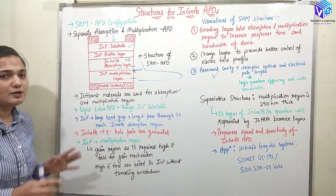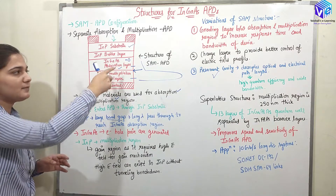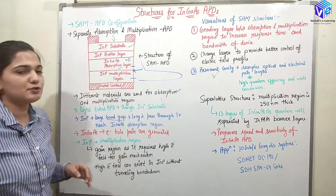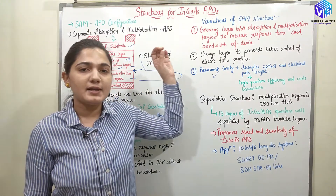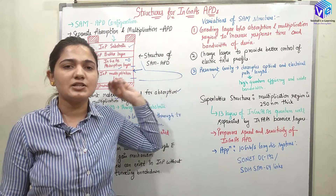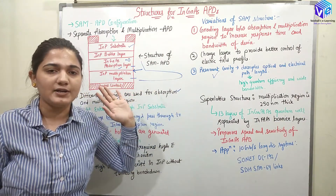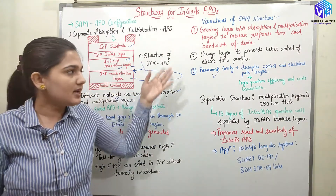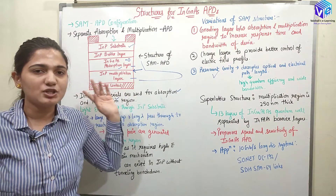So basically we have a different material for the absorption and the multiplication layer. We can use a grading layer, a charge layer, and a resonant cavity. These are the three variants of the SAM structure.